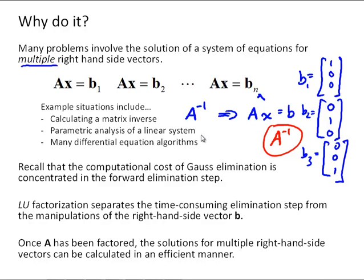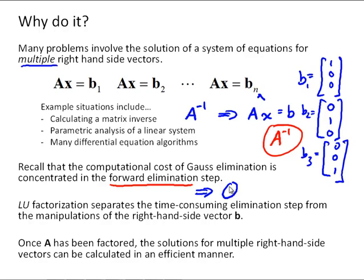Also, parametric analysis of a linear system — we'll be looking at that in a programming assignment. And further in this class, we'll see how several differential equation algorithms can include multiple solutions of the same linear system with only the right-hand side vector changing. Recall that the computational cost of Gauss elimination is concentrated in the forward elimination step, which is order N cubed, while back substitution is only order N squared.